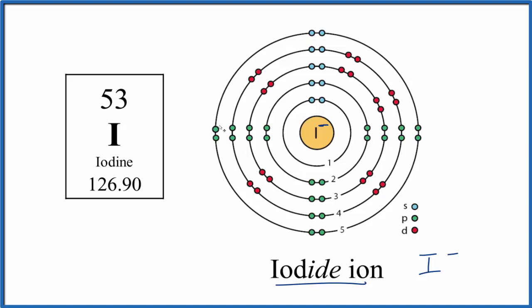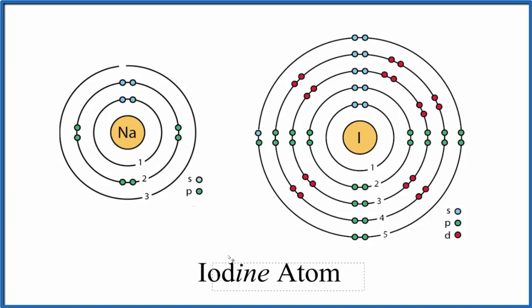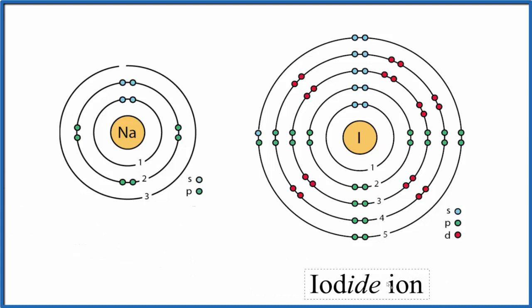You might be asking where this extra electron comes from. Let's take a look at that. So we're back to our iodine atom with the number of protons in the nucleus equal to the number of electrons. A sodium atom has one electron in its outer shell, one valence electron. We could move that to the iodine. Now the iodine has 8, so it's not iodine - it's the iodide ion and it has a negative charge.